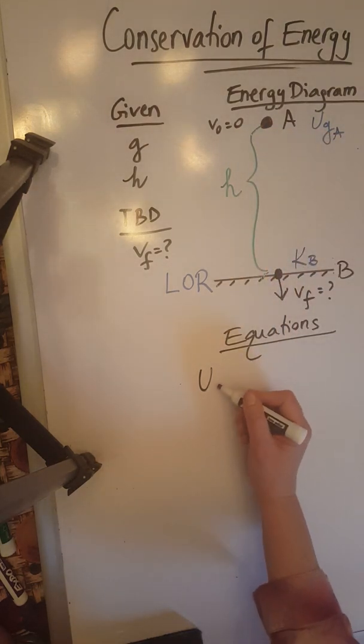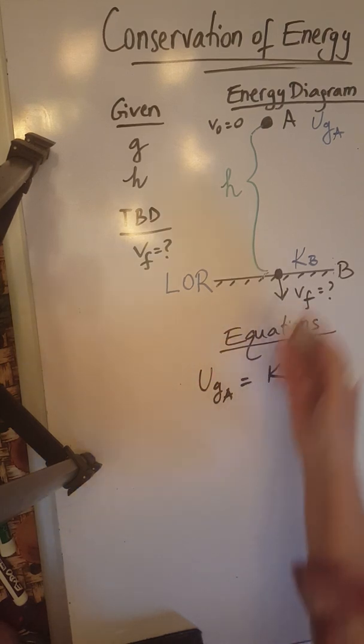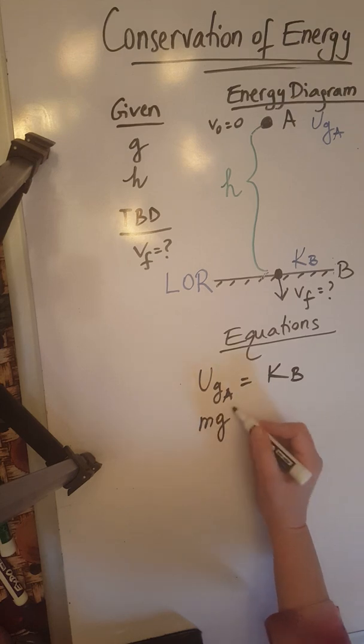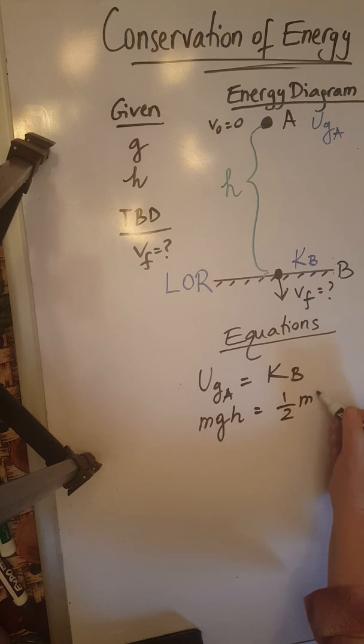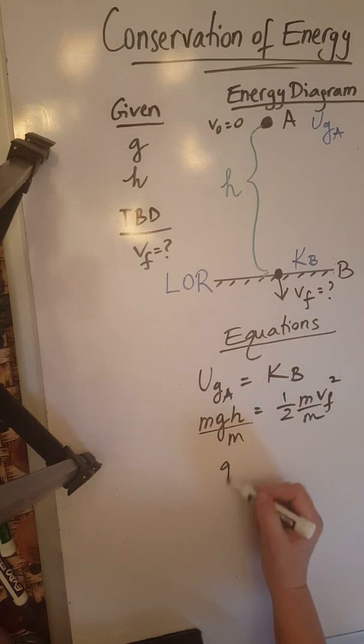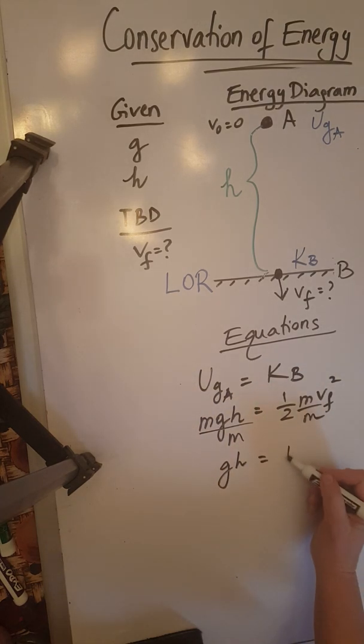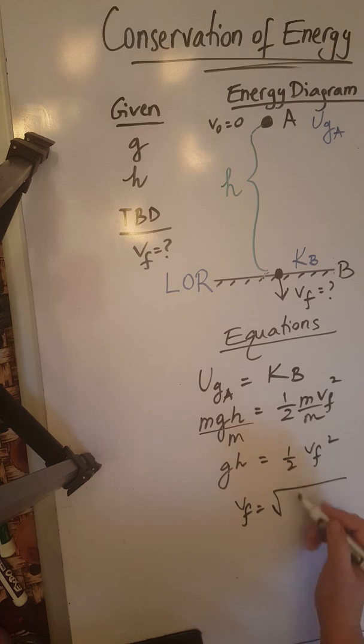So we're going to set UGA equals to KB. UGA is going to be M times G times H. KB is going to be one half M VF squared. Divide both sides by the mass. Since it's not given, gives us GH equals one half VF squared. And solve for VF is going to be square root of 2GH.